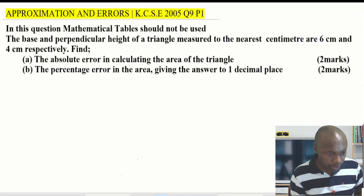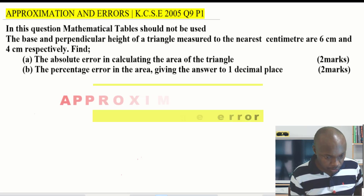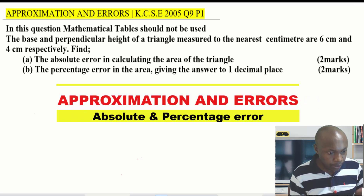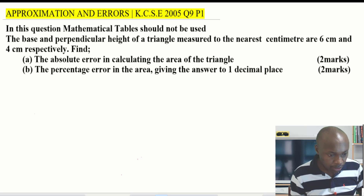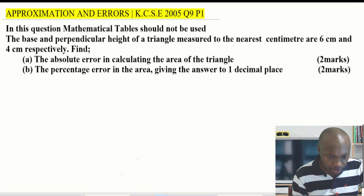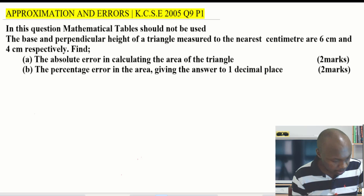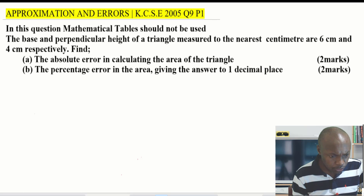Approximation and errors. In this question, mathematical tables should not be used. The base and perpendicular height of a triangle, measured to the nearest centimeter, are six centimeters and four centimeters respectively. Find: (a) the absolute error in calculating the area of the triangle, and (b) the percentage error in the area, giving your answer to one decimal place.